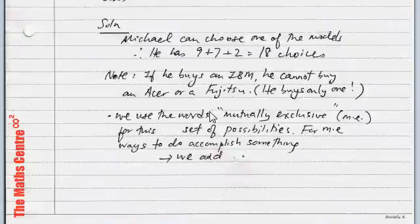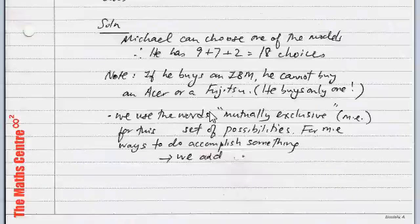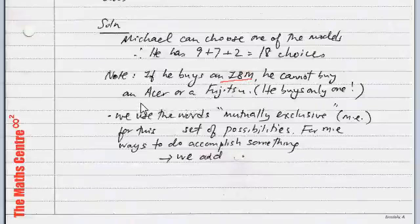Michael has 18 choices. That is, nine IBM models, seven Acer models, and two Fujitsu models, but unfortunately, he can only buy one. So, he has to make a choice among 18 choices. So, what I'm trying to impress upon you is, if he buys an IBM model, he cannot buy an Acer, he cannot buy a Fujitsu.